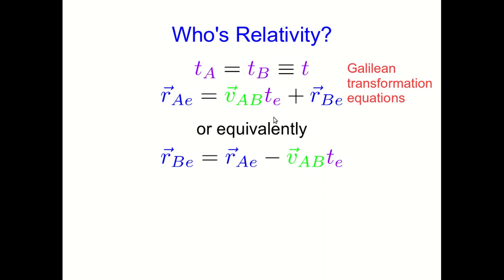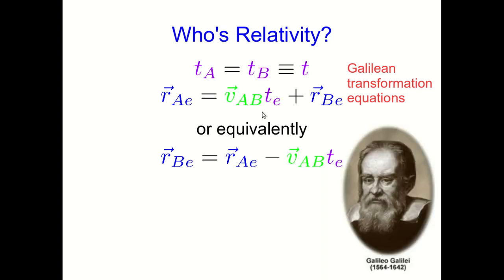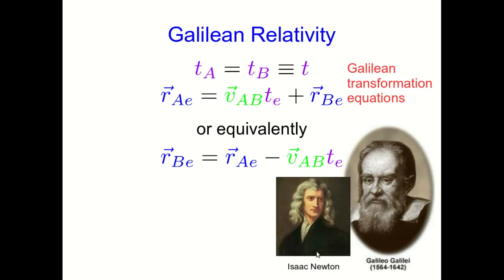They're called the Galilean transformation equations, named after this guy. And so what we're doing here is what is called Galilean relativity. Although this guy's pretty responsible for it as well, but he's got so many things named after him. Let's give this one to Galileo.